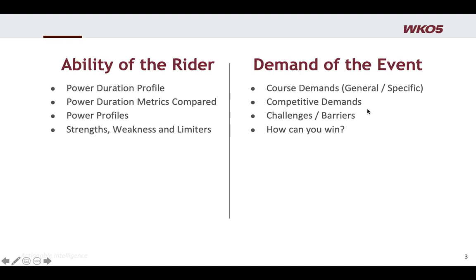When you start talking about demands of the event, you start with course demands — both general and specific. A general demand might be: it's 125 kilometers. A specific demand might be: there's a lot of climbing with two climbs of 300–400 meters at 12% grade. You also have competitive demands: who's in the race, how fast will the race be, do I have to deal with teams, or am I just trying to hit a certain time?